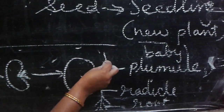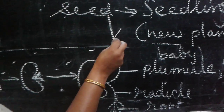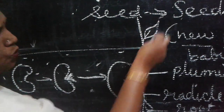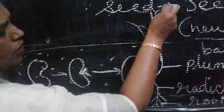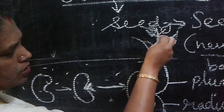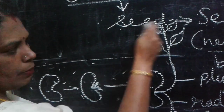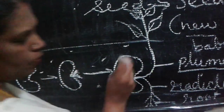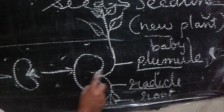The upper portion that goes upward is known as the plumule. It grows upward and becomes the shoot system. The shoot system includes leaves, branches, stem, flower, and fruit — everything. The radicle and the plumule are the two parts that develop after germination.